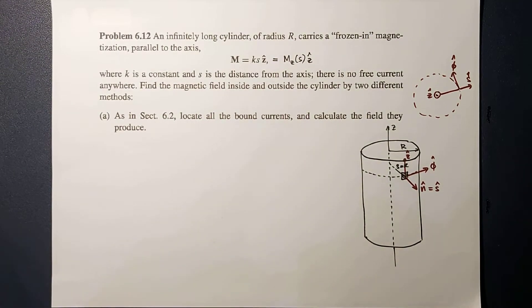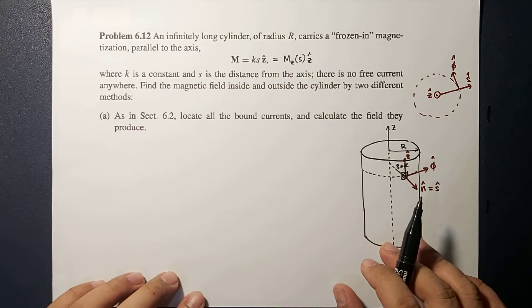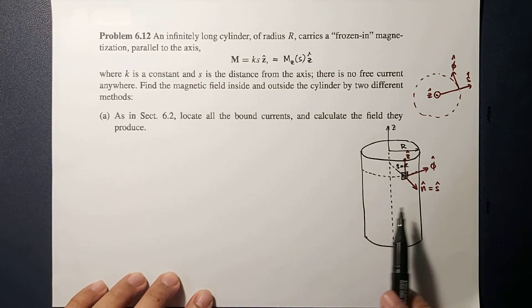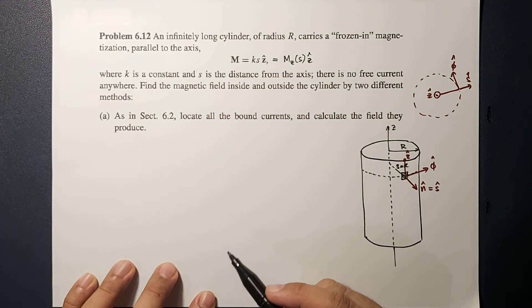So first, let's compute for the bound current. There are two bound currents: one within the volume of the cylinder and another one within the surface, the surface bound current.